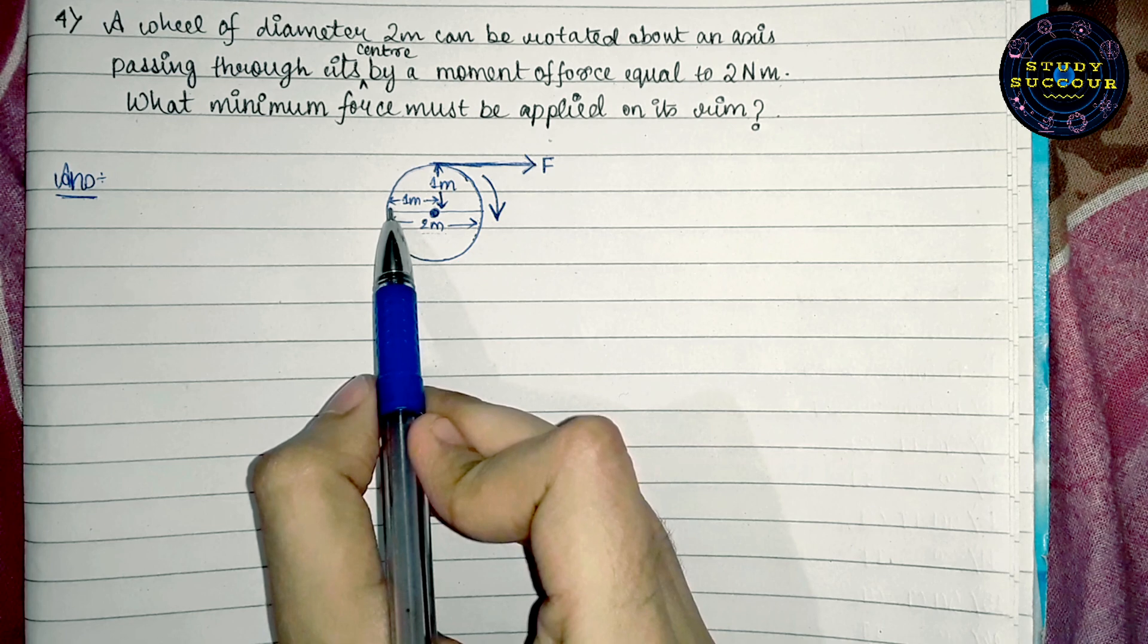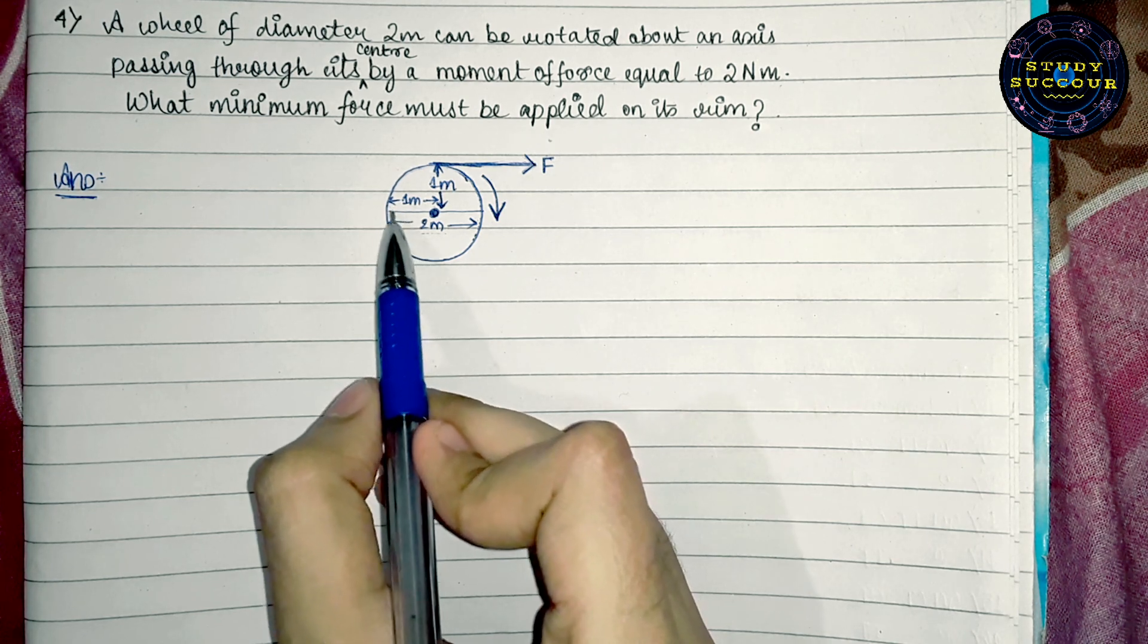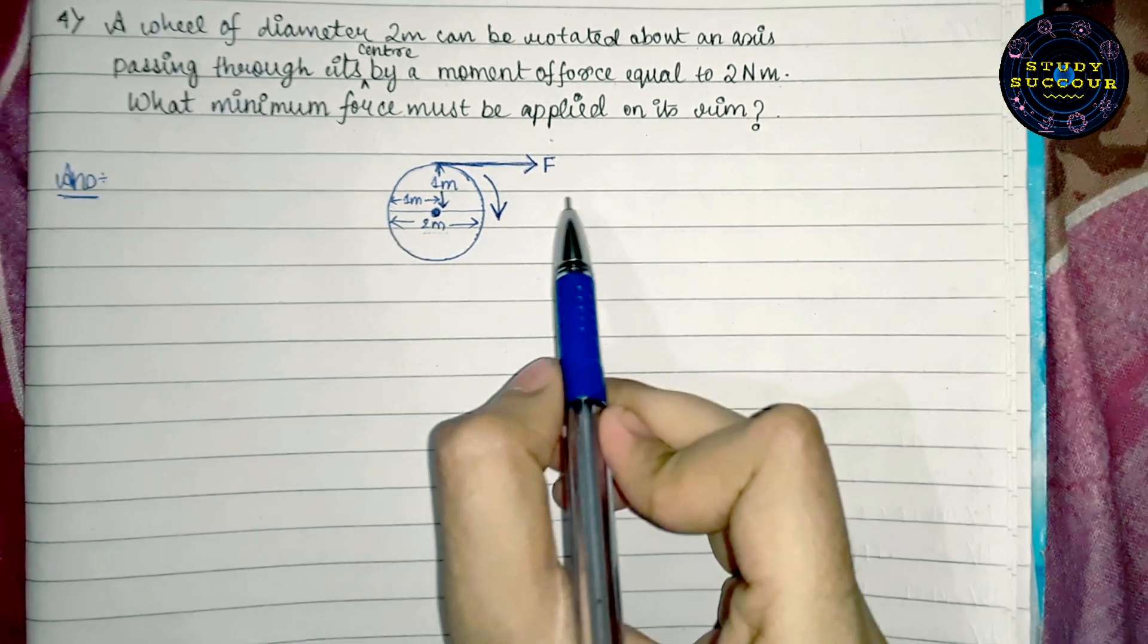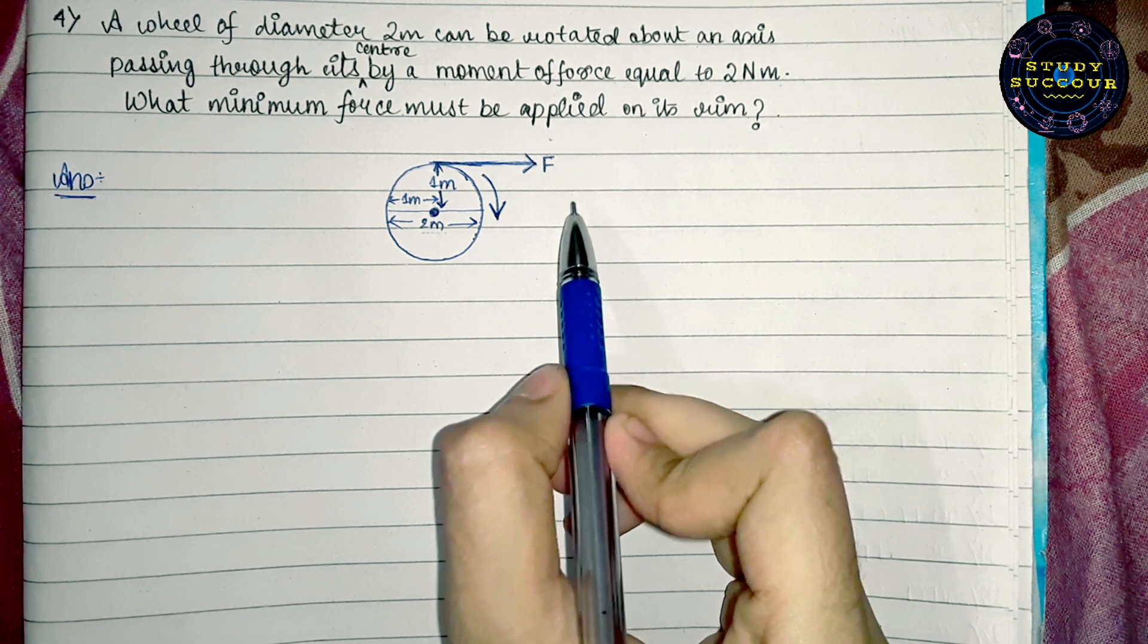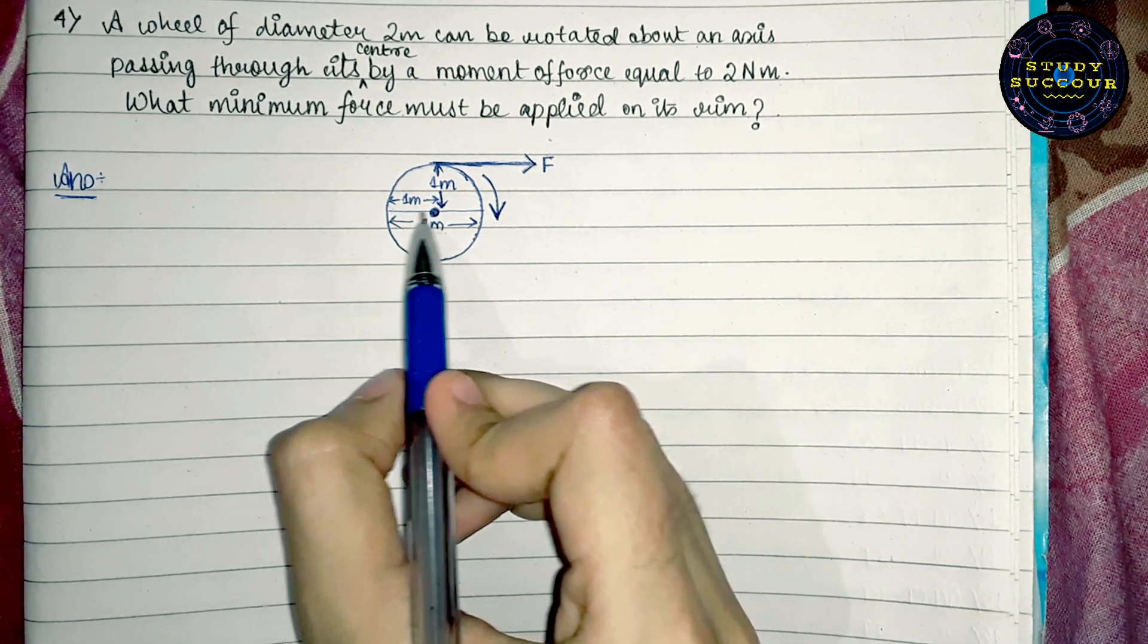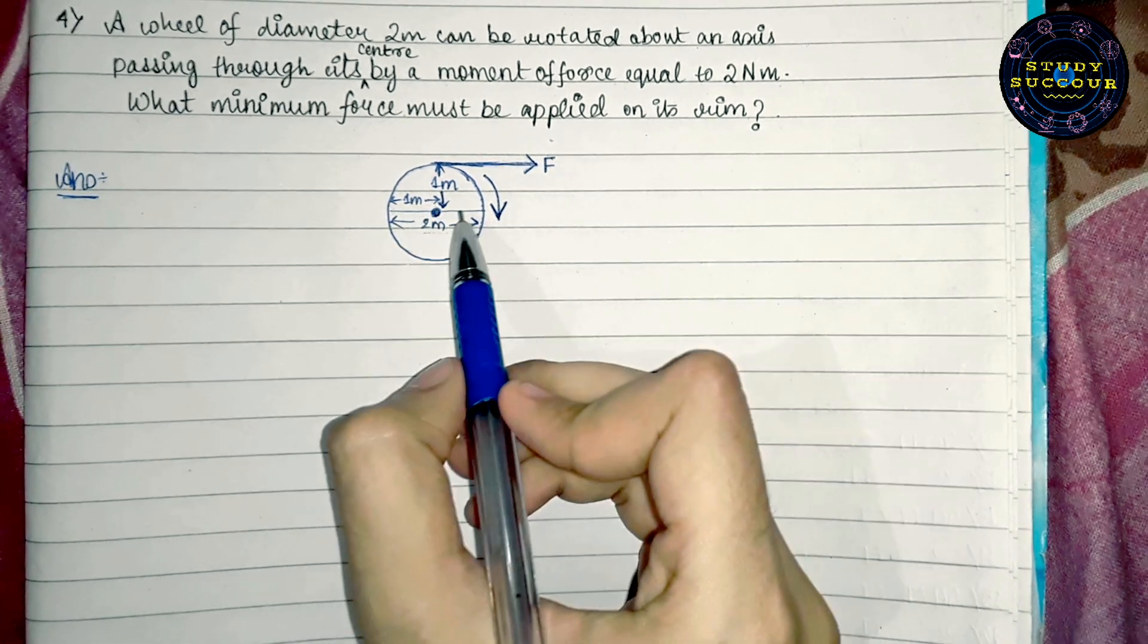So, we can conclude that the radius of the wheel is 2 by 2 that is d by 2. R is radius is diameter by 2. The radius is 2 by 2 equals to 1 meter.